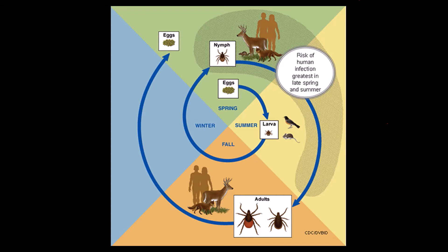Nymphs then molt and become adults in the fall. Those adults will try to find each other and mate — both male and female need a blood meal, so that is another period when we are susceptible to infection. Adults survive all winter and emerge in the spring to lay their eggs, so there really is the potential to become infected at any time during the year. But spring and early summer are the most critical periods to be aware.